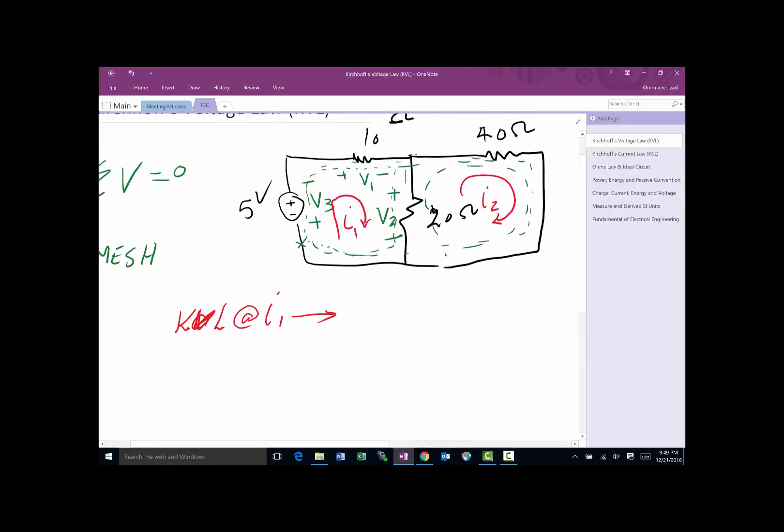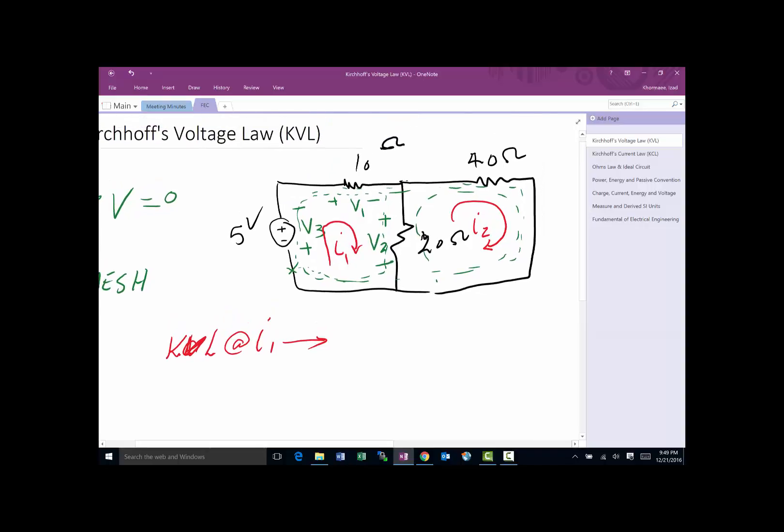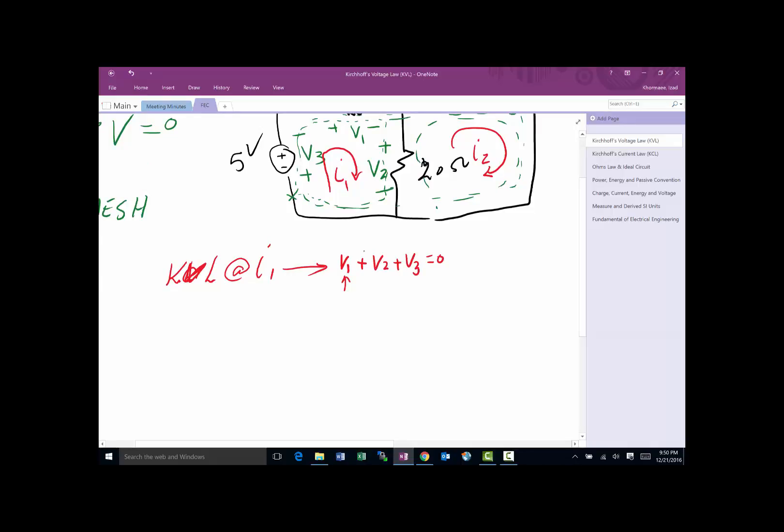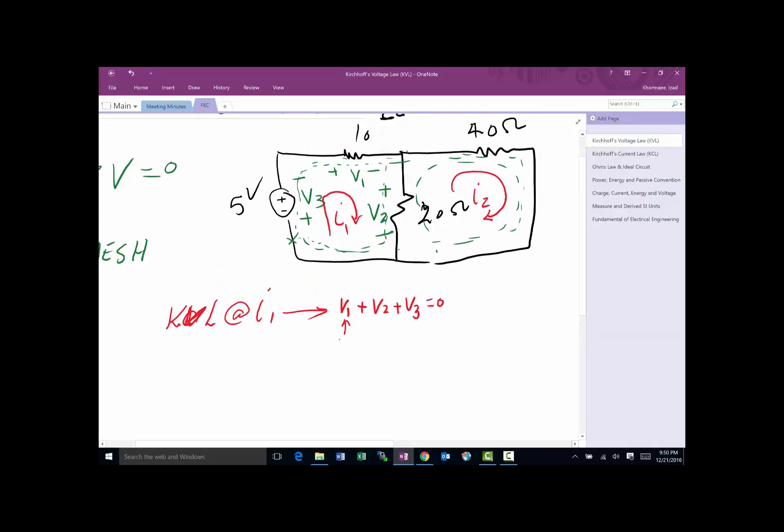KVL at I1—so the reader knows what we are doing, we are going around this particular loop. It's going to be literally I1 times 10 volts plus to minus, because resistors are passive devices where the voltage drops in the direction of current. Sum of voltages must be equal to zero, so V1 plus V2 plus V3 equals zero. V1 is R times I, which is 10 times I1.